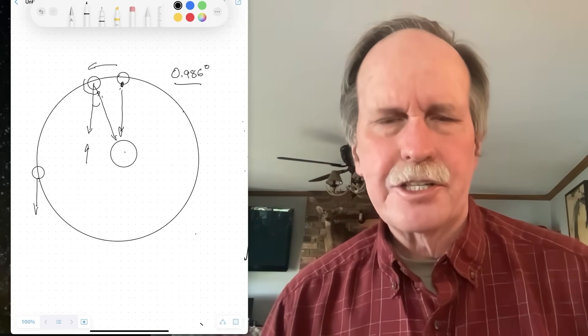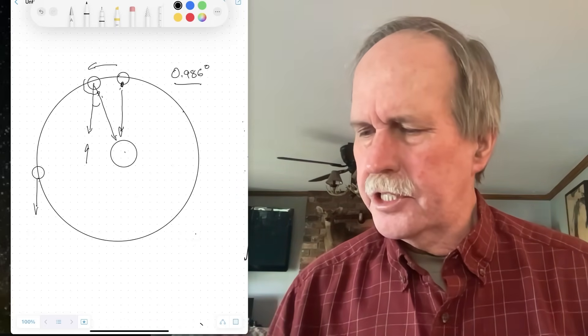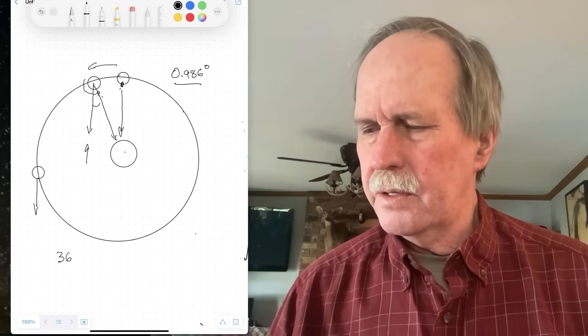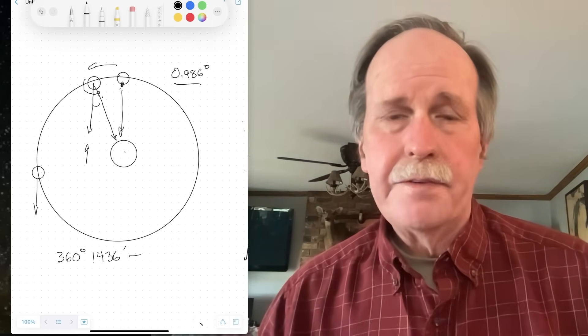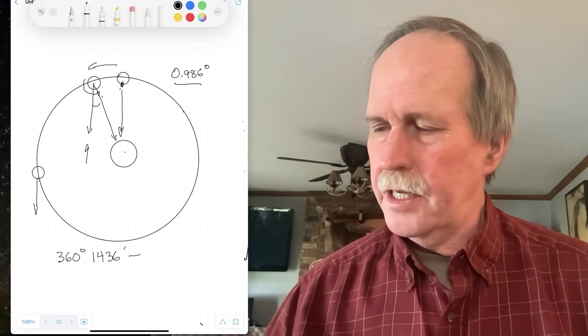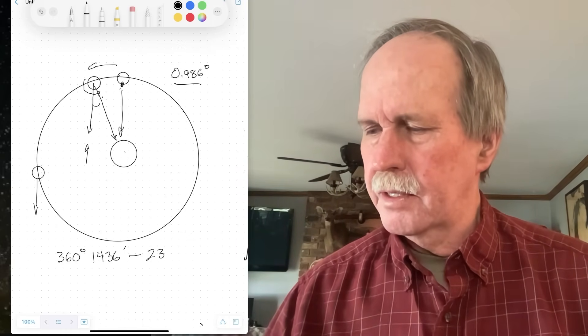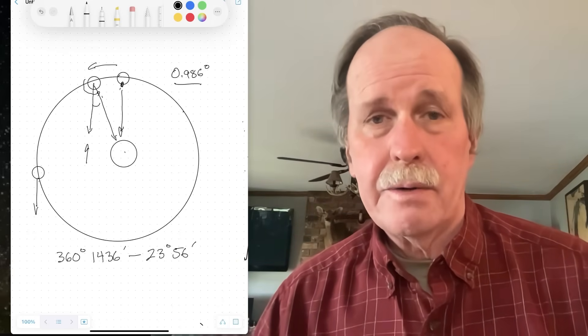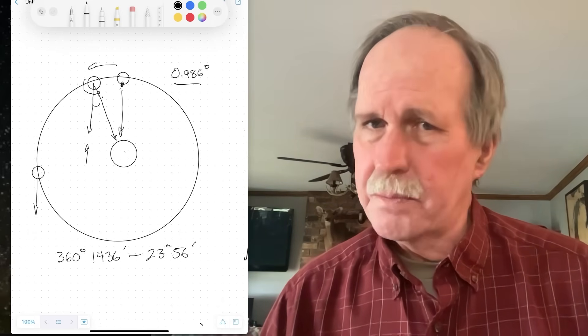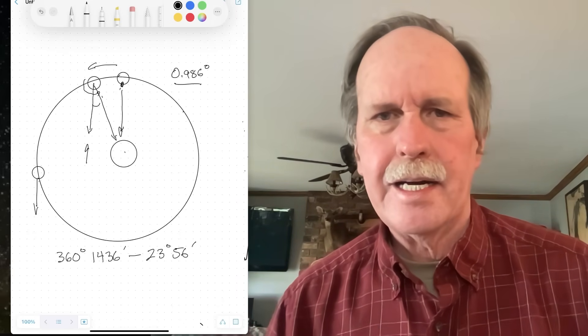So how fast does the Earth actually rotate? The actual rotation of the Earth is 360 degrees in 1,436 minutes. Now if you do the math on that real quick, you'll see that that is 23 hours, 56 minutes. It's actually 23 hours, 56 minutes, and 4 seconds, but let's kind of ignore the 4 seconds for right now.